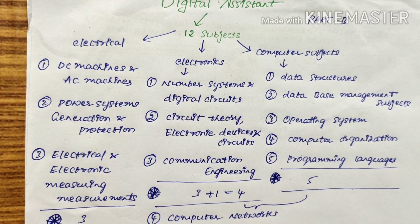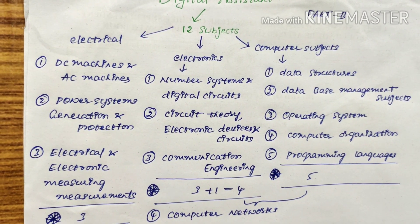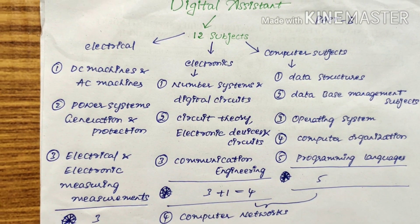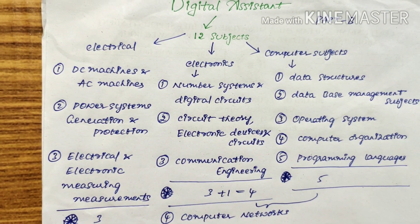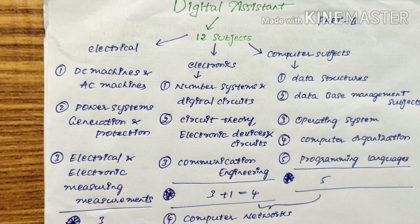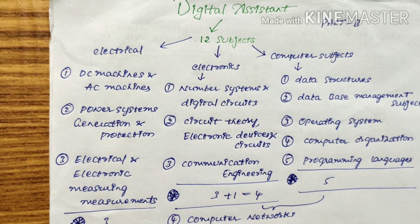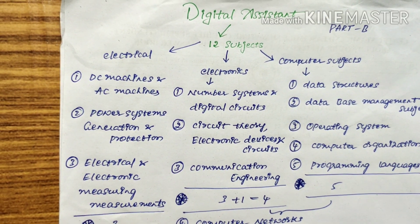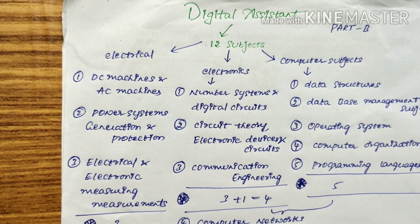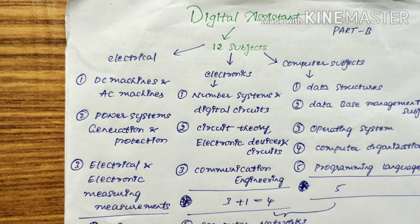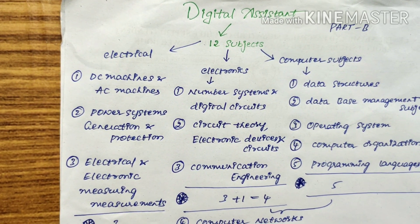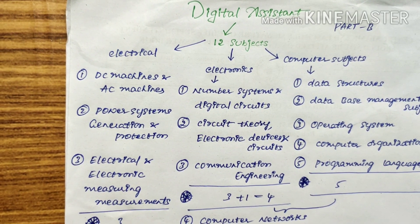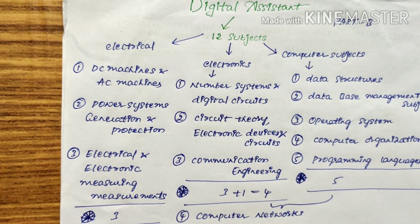For Computer Organization, also focus on floating point representation, integer representation, and arithmetic representation. The last computer subject is Programming Languages, which includes C basics and OOP concepts. C basics covers C tokens, expressions, operators, storage classes, pointers, and dynamic allocation. OOP concepts include overloading, polymorphism, constructors, destructors, and type conversions.